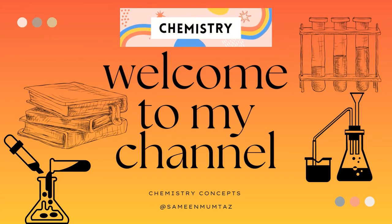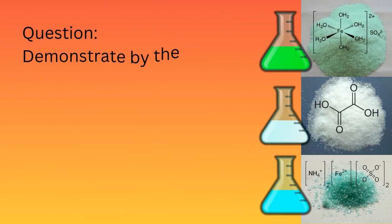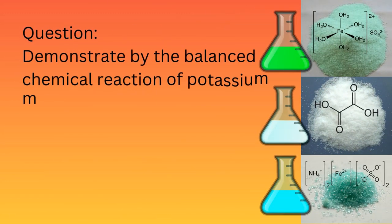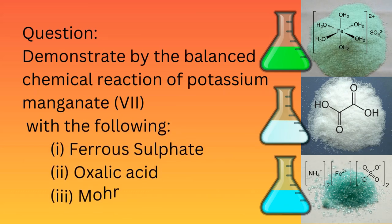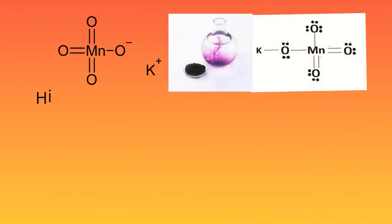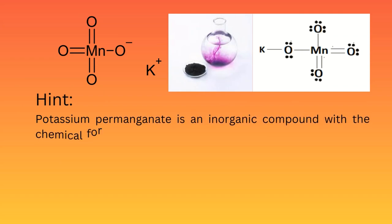Welcome to my channel, Chemistry Concepts by Samin Mumtaz. The question is: demonstrate by balanced chemical reactions of potassium permanganate (KMnO4) with the following: 1) ferrous sulfate, 2) oxalic acid, 3) Mohr's salt.